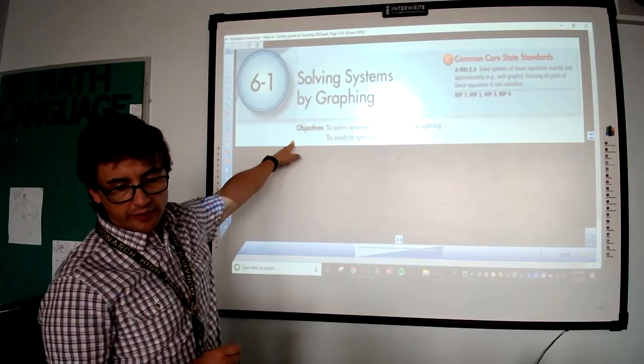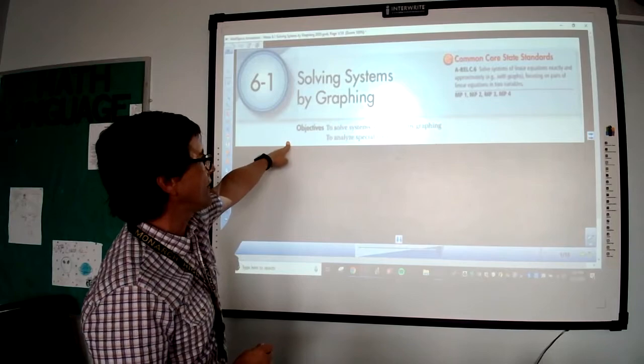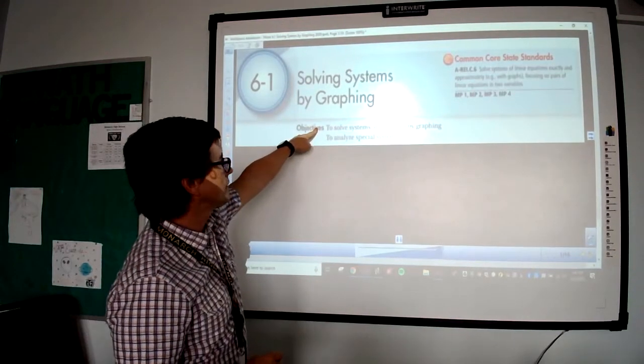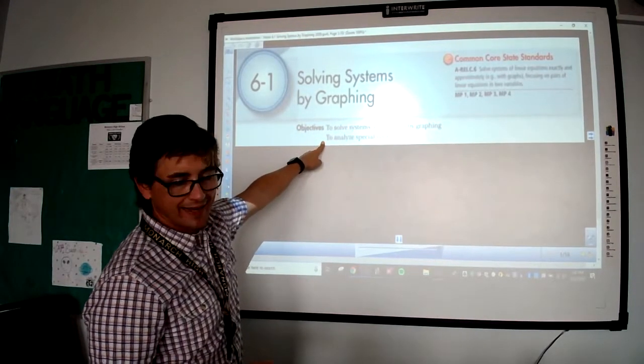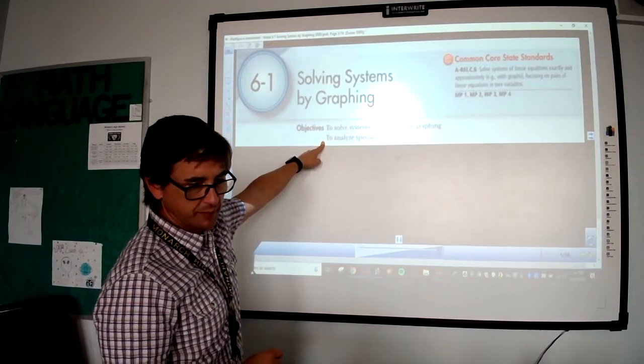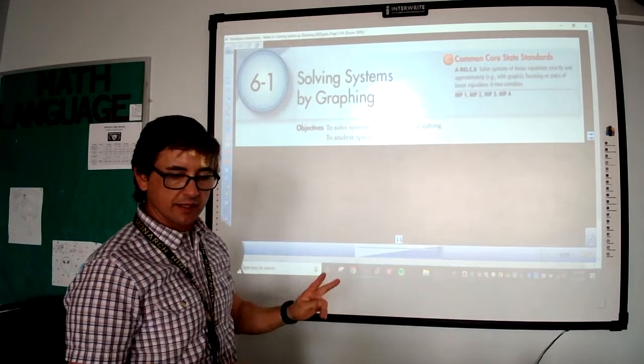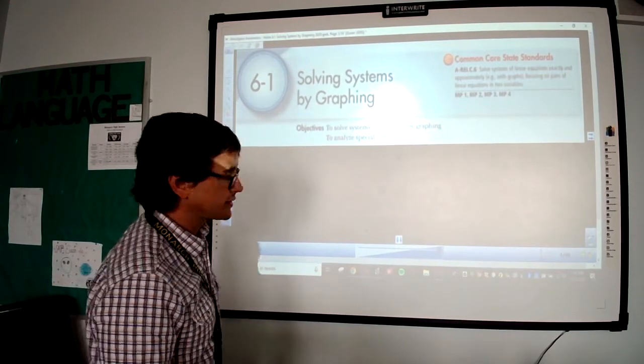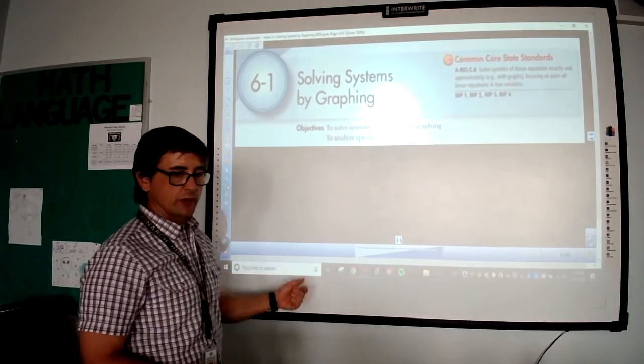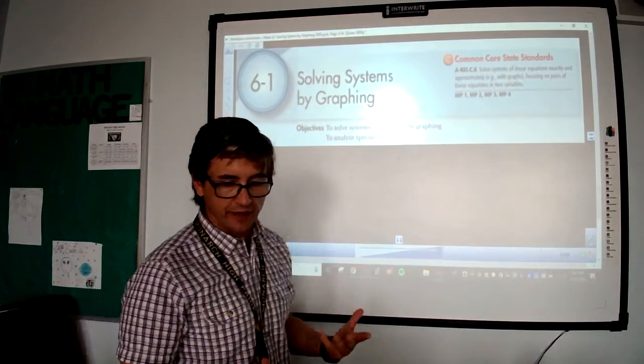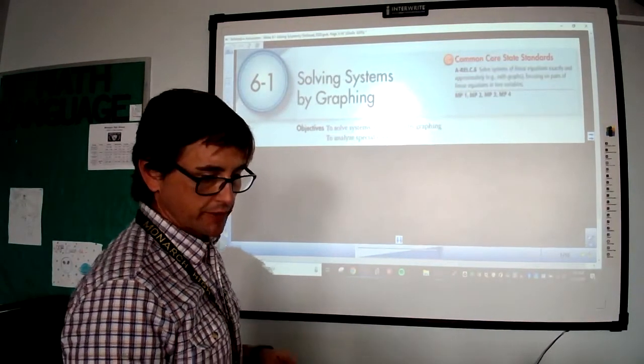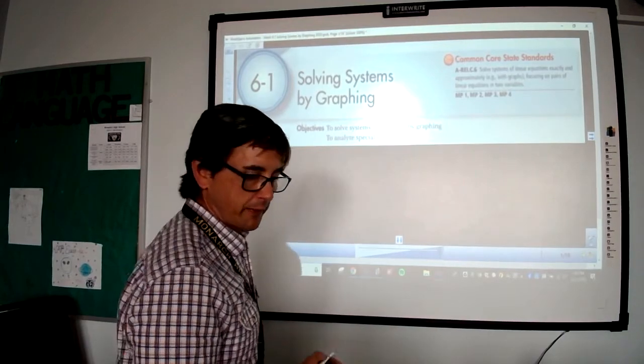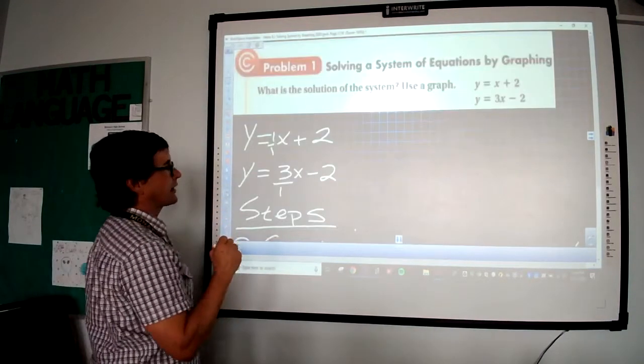So 6.1 solving systems by graphing and we're going to also analyze special systems. All systems mean is two equations. Two of something is a system. We're graphing two equations. In math you can graph four, five, six equations. Totally doesn't matter. So 6.1 solving systems by graphing.